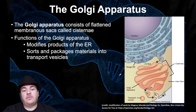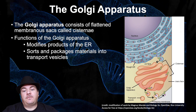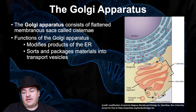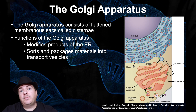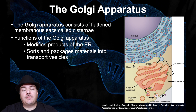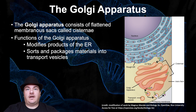The next place those proteins need to go is called the Golgi apparatus. The Golgi apparatus is made up of flattened membrane sacs called cisterna — so it looks like these flattened sacs. The purpose of the Golgi is to modify products of the ER.